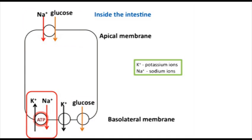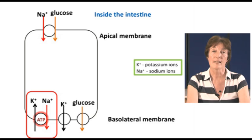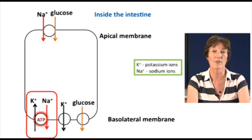The key to this is the active transporter on the basolateral membrane. This pumps sodium ions out of the cell and exchanges them for potassium ions. This is an example of active transport — it uses energy from the breakdown of ATP to drive this process. So this transporter is known as a sodium-potassium ATPase.